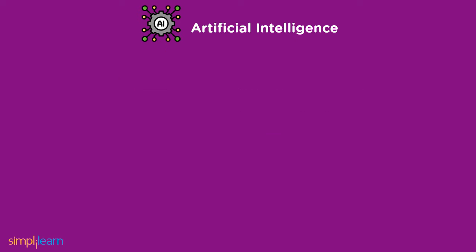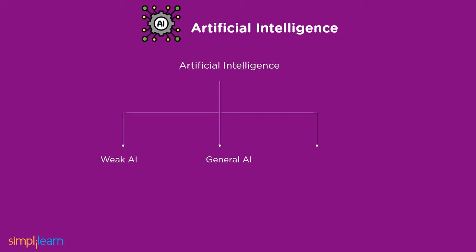Let's have a glance at the types of artificial intelligence. Weak AI performs only specific tasks, like Apple's Siri, Google Assistant, and Amazon's Alexa. General AI, also addressed as artificial general intelligence, is equivalent to human intelligence — an AGI system is capable of carrying out any task that a human can. Strong AI aspires to build machines that are indistinguishable from the human mind. Both general and strong AI are hypothetical right now, and rigorous research is ongoing.